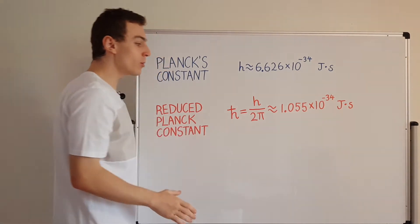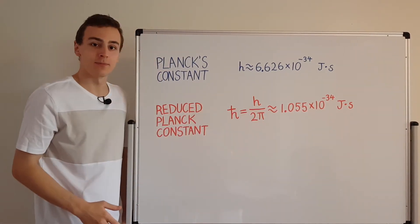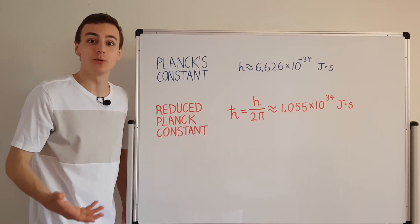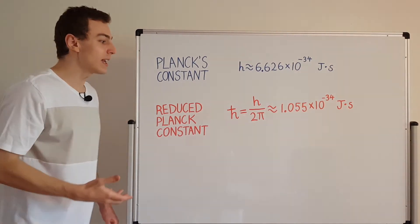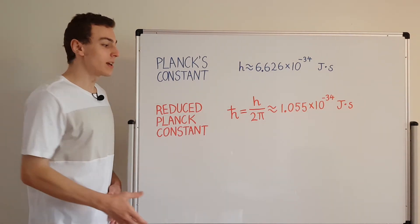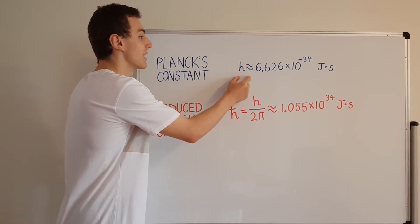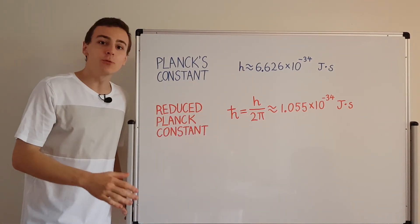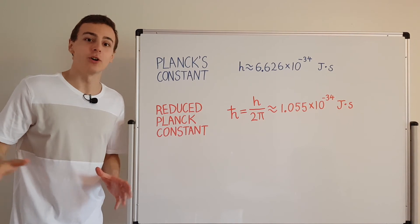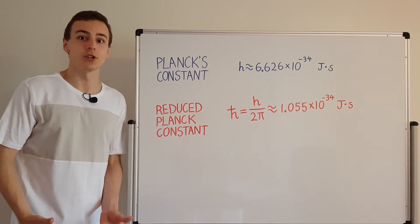So why would we even go to the trouble of dividing by this factor of 2π? What do we actually gain from doing this? Well, we can actually make this more natural in the equations that it shows up in. So sometimes it's more natural to write equations in terms of h-bar, and sometimes it's more natural to write it in terms of h. It's just a way of getting rid of pesky factors of 2π that don't really need to be there and don't add anything to the equation.